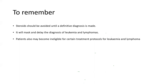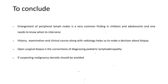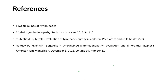Remember: steroids should be avoided until a definitive diagnosis is made, as they mask and delay the diagnosis of leukemia and lymphoma. Patients may also become ineligible for certain treatment protocols. To conclude: enlargement of peripheral lymph nodes is a very common finding in children and one should know when to intervene. History, examination, and clinical course along with radiology helps make decisions about biopsy. Open surgical biopsy is the cornerstone for diagnosing pediatric lymphomas. If malignancy is suspected, avoid steroids.